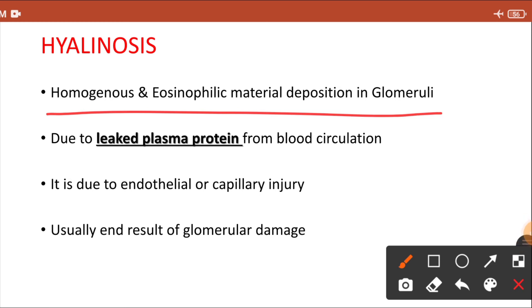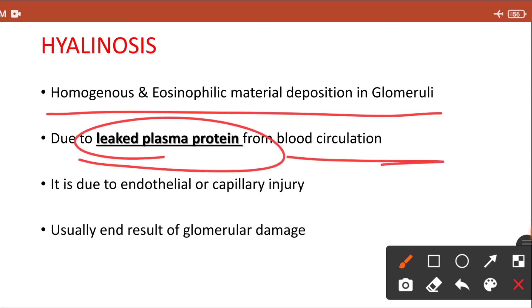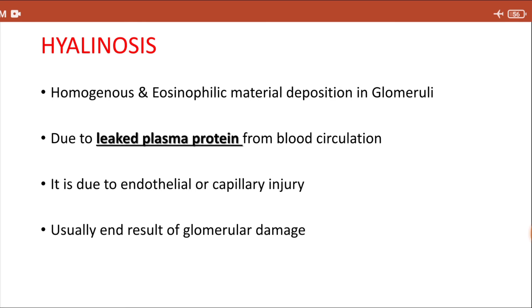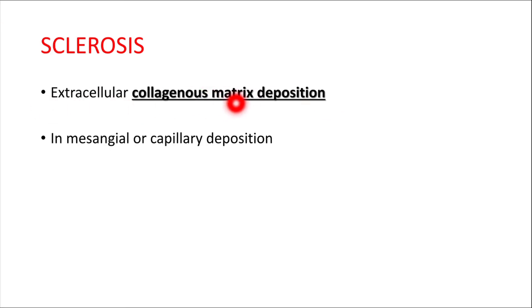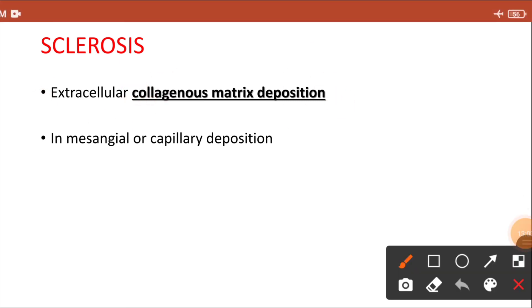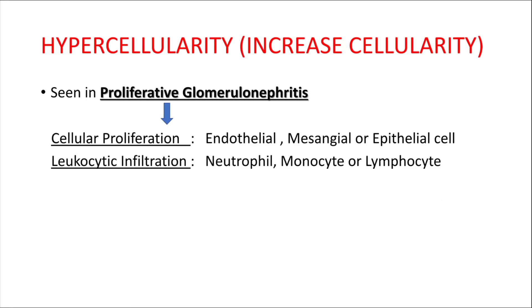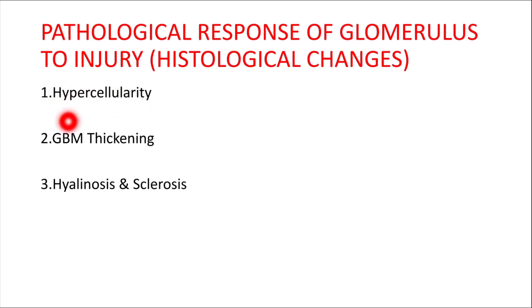The third histological change in the glomerulus to injury is hyalinosis and sclerosis. Hyalinosis means homogeneous eosinophilic hyaline material deposition in the glomerulus, caused by damage to endothelial cells and leakage of plasma protein and fibrin from blood circulation. Hyalinosis usually indicates the end-stage result of glomerular damage. Sclerosis refers to extracellular collagenous matrix deposition in the mesangium or capillaries, and is particularly seen in diabetic glomerulosclerosis.